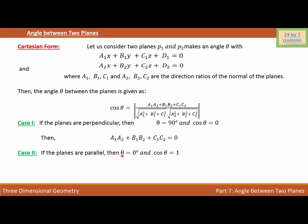Case 2. If the planes are parallel, then theta is equal to 0 degrees and cosine 0 is 1. So, cosine theta will be 1. In that case, A1 over A2 is equal to B1 over B2 is equal to C1 over C2. In other words, if you have the direction ratios of two planes, just find this ratio and if these ratios are the same, then the angle between two planes is 0 degrees and the planes are parallel.